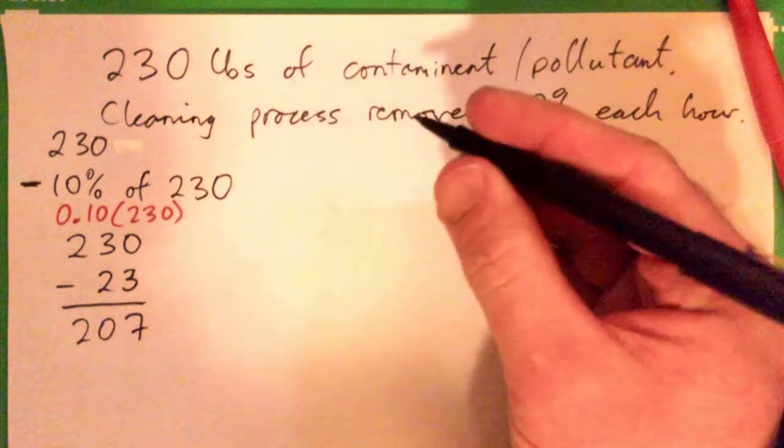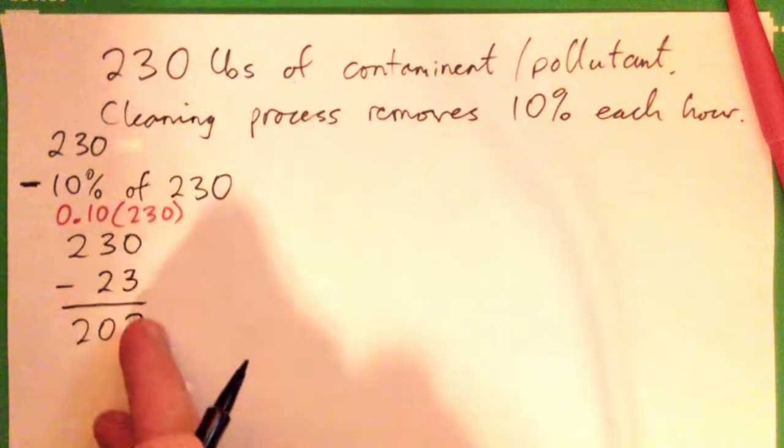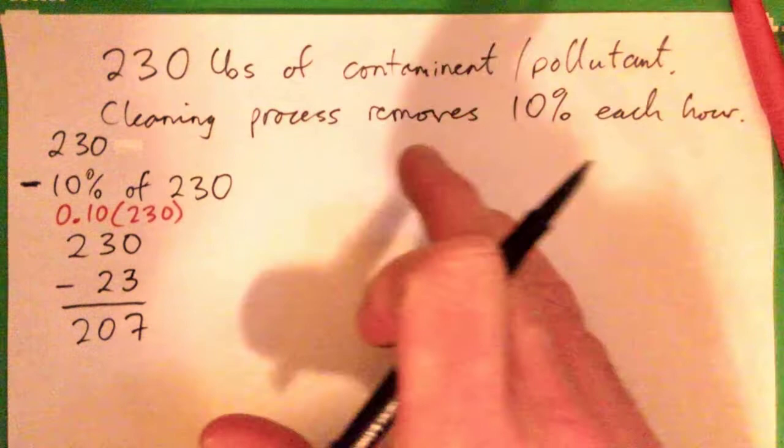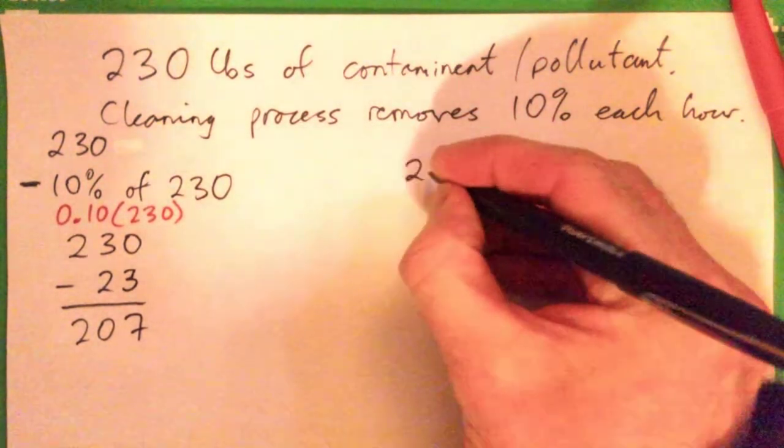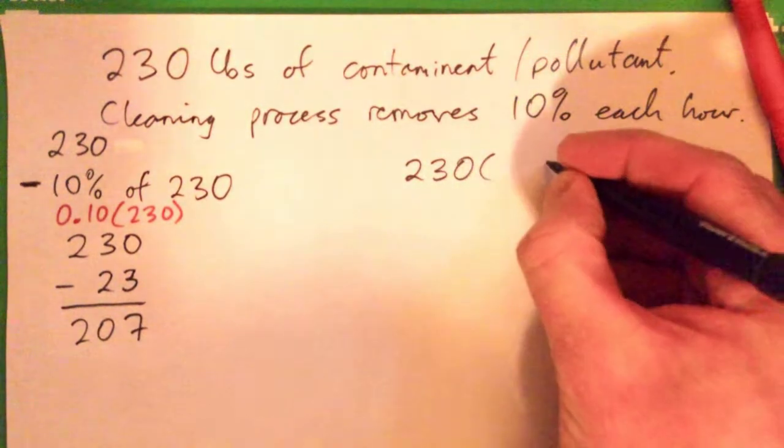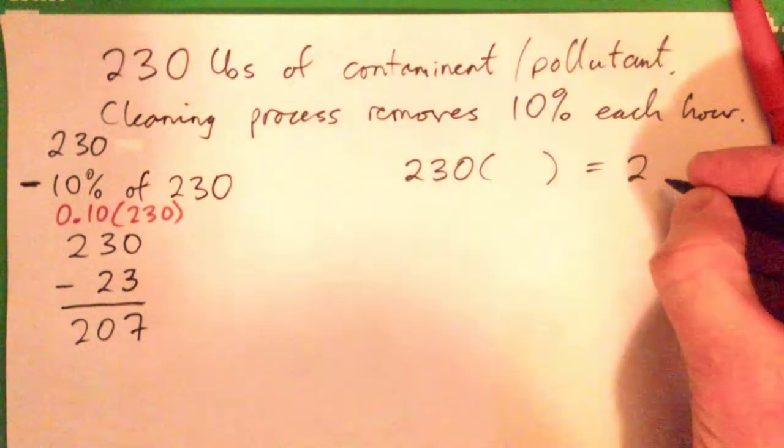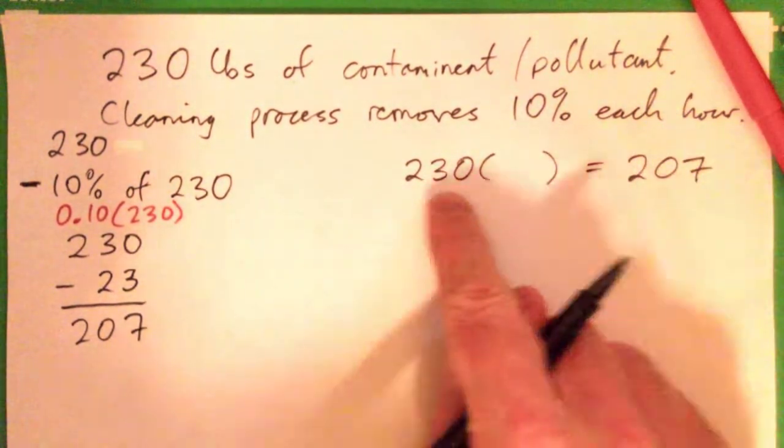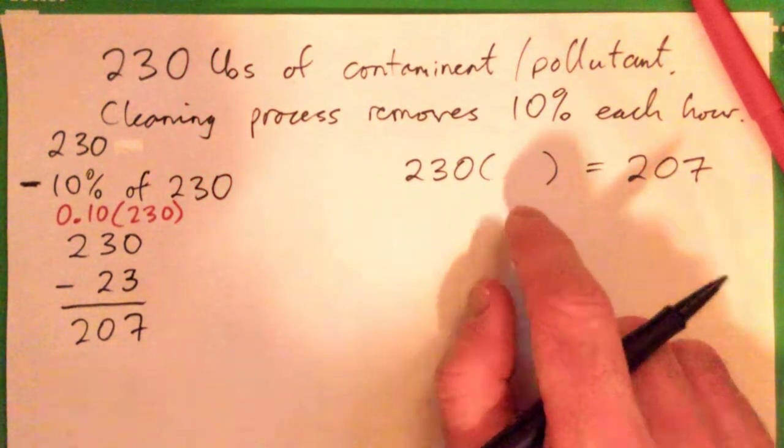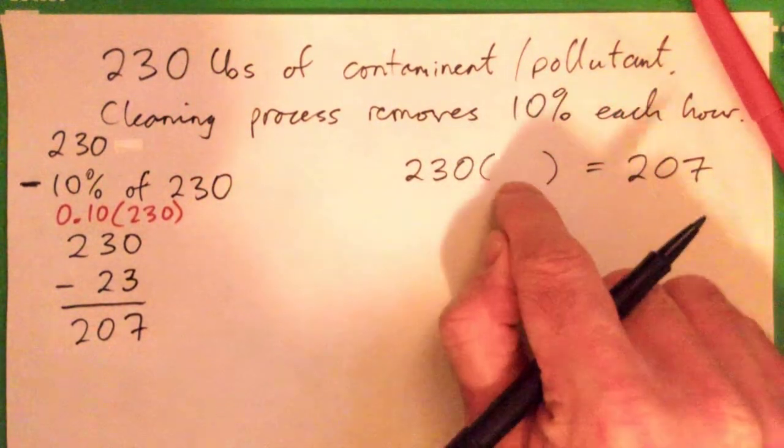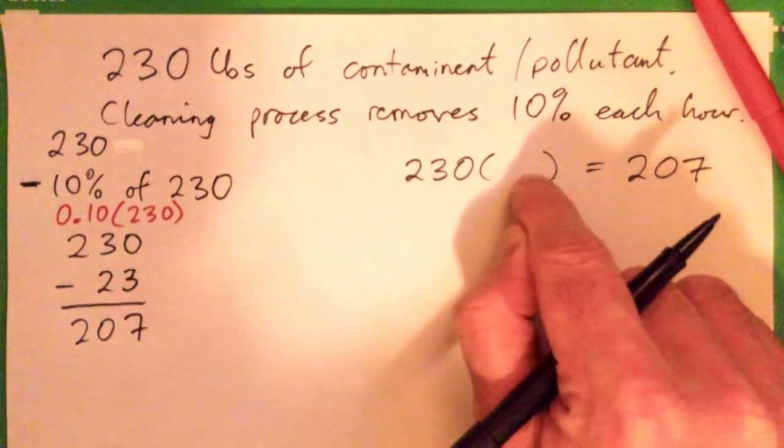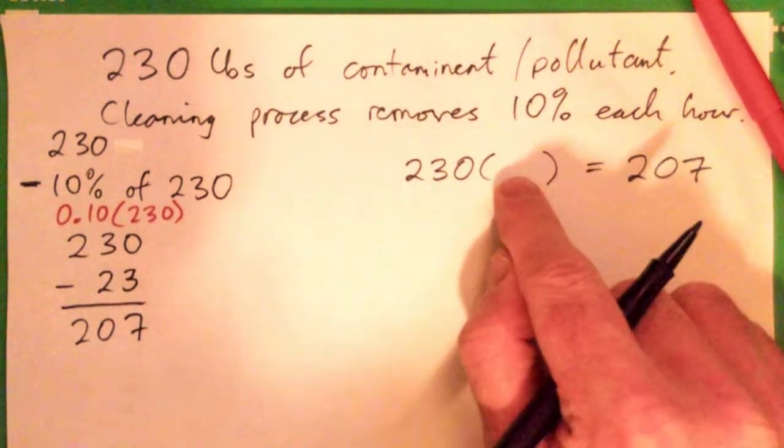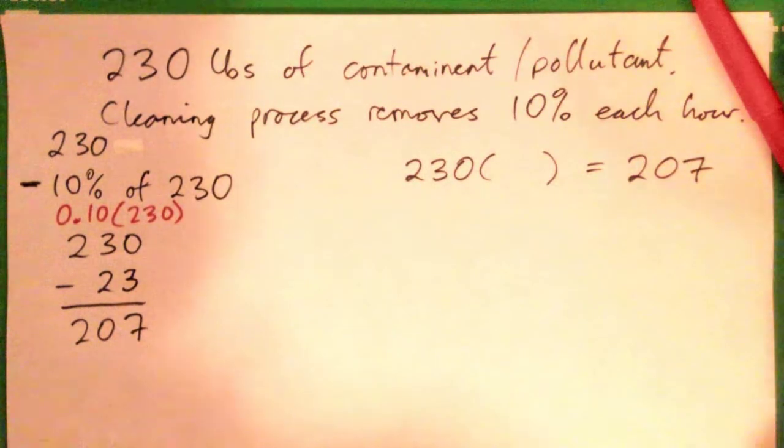So what I want you all to do, this is kind of one way, but there's another way where I want you to figure this out with just one operation. There's a way of doing 230 times something to get 207. And I want you to figure out what that something is. If you can figure that out, then that really helps figure out the whole problem.